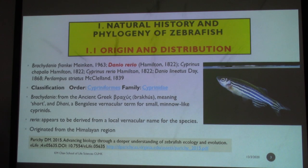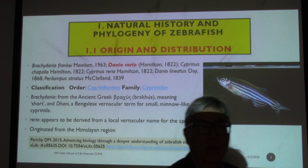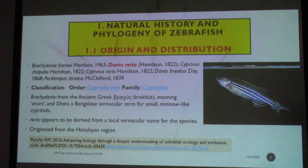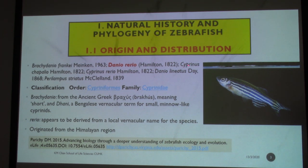So, zebrafish — why zebrafish, and what is zebrafish? Where is it from? This is a picture of a zebrafish. A zebrafish, its genus name, is known as Danio rerio. It was also known as Brachydanio rerio back a few decades ago, but right now we confirm its name as Danio rerio. It's actually a carp species. In the genus Cyprinus, it was also known as Cyprinus trepidus, and also Cyprinus rerio.